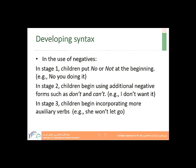Regarding the use of negatives in syntax, there are also three stages. Stage one: children put 'no' or 'not' at the beginning of phrases, such as 'no you doing it'. Stage two: children begin using additional negative forms such as 'don't' and 'can't' — for example, 'I don't want it'. Stage three: children begin incorporating more auxiliary verbs, such as 'she won't let go'.